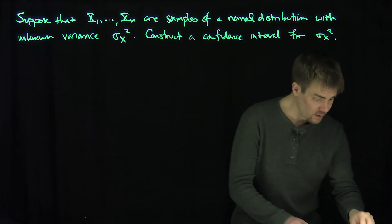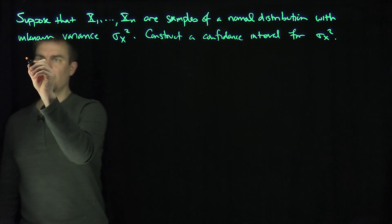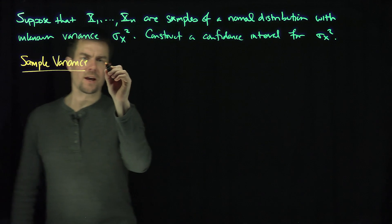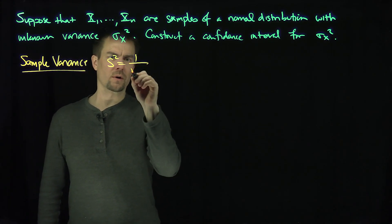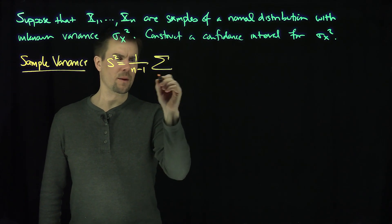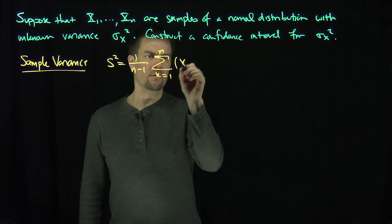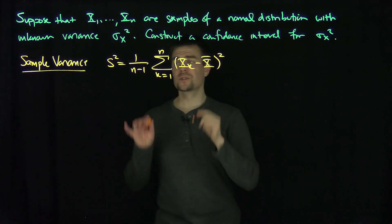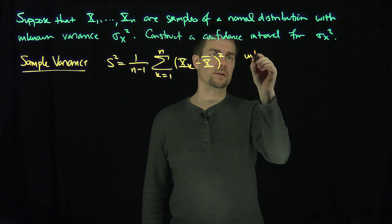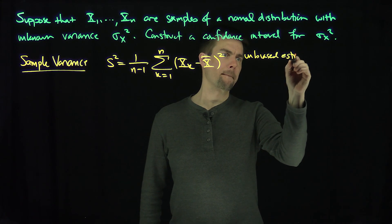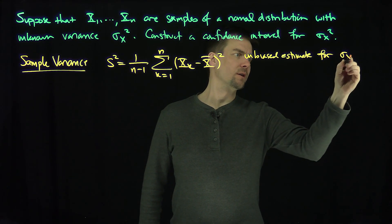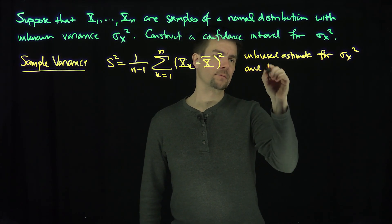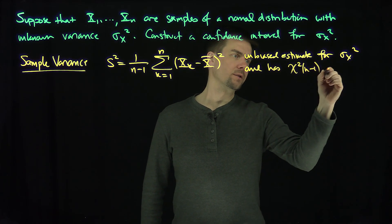What we're going to do is use the sample variance. Recall that the sample variance is an unbiased estimate of the variance. That is S squared equals 1 over n minus 1, times the sum from k equals 1 to n of (xk minus x-bar) quantity squared. In a previous video, we showed this is an unbiased estimate for sigma x squared, and it has a chi-squared n minus 1 distribution.